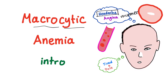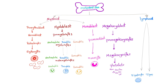Macrocytic literally means big cells. As mentioned before in my video on hematopoiesis, you have the multipotent stem cells producing myeloid as well as lymphoid cells. The myeloid will produce the RBCs, neutrophils, basophils, eosinophils, and monocytes. The lymphoid will produce B lymphocytes and T lymphocytes. The megakaryoblast, which produces platelets, comes from the myeloid.